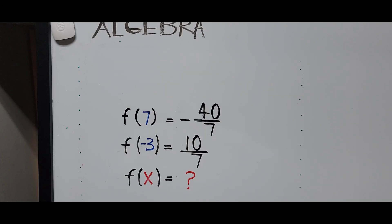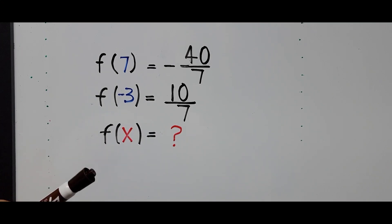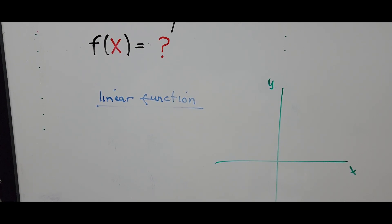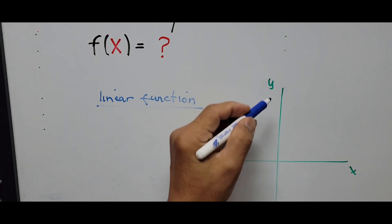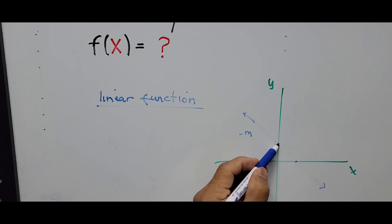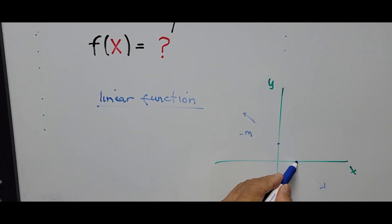Now let's start solving the problem. f(x) is a linear function. A linear function is a function whose graph is a straight line — it is a polynomial function of degree 0 or 1. On the Cartesian coordinate plane, a straight line with a negative slope leans toward the second quadrant. This point here is the y-intercept and this point is the x-intercept.